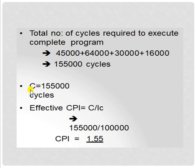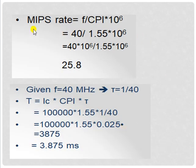We can represent total cycles as C = 1,55,000. So CPI = C / IC = 1,55,000 / 1,00,000 = 1.55. The MIPS rate equation is MIPS = F / (CPI × 10^6). Here F = 40 MHz, so substituting: MIPS = 40 / (1.55 × 10^6) — after computation we get MIPS rate = 25.8.